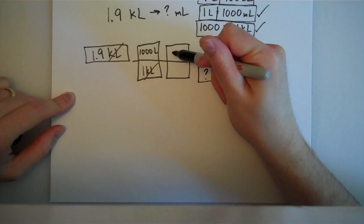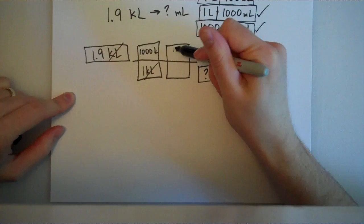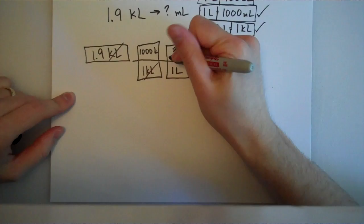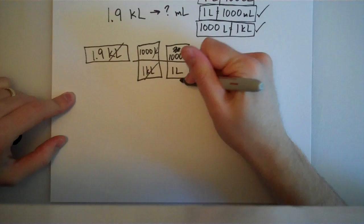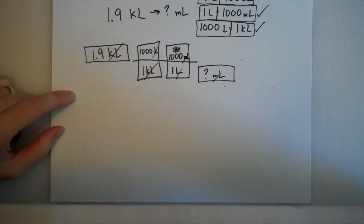Well, you'd see that the liters don't cancel, so that wouldn't work. But, because it's a domino, I can flip it. So, why don't I put the 1 liter on the bottom and put the 1,000 milliliters up top? That way, the liters cancel, milliliters cancel, and because everything has canceled, I'm done.